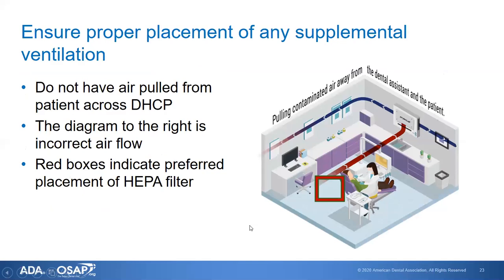This diagram shows one way to place a ventilation system. In this example — I've placed a red box there — you can see the air is drawn across the patient, past the dental assistant, and into the ventilation system on the wall. That is the improper way to create airflow in the office. You want airflow to go from clean to contaminated, not the other way around.